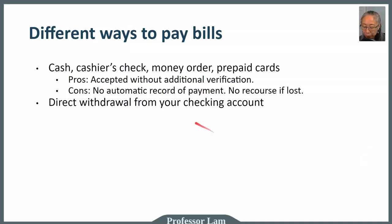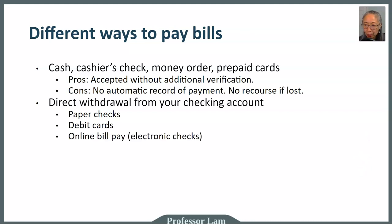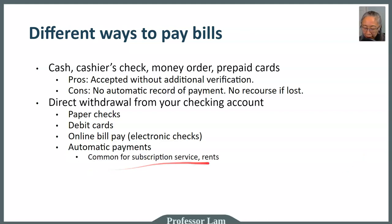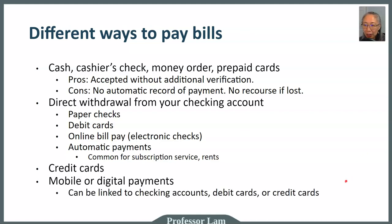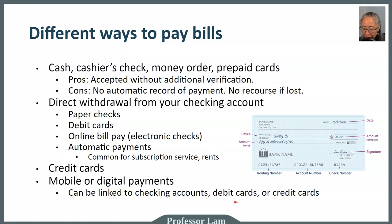Another option is to pay from your checking account. You can do that by using a paper check or a debit card. You can also use an online service to have your bank send an electronic check. You can also set up recurring automatic payment, which is very common for rent or subscription services. You can also use a credit card — note that a credit card is a loan, not your own money. You can also use mobile apps or digital payment, which are just a platform that can be linked to either your checking account directly, your debit card, or a credit card.